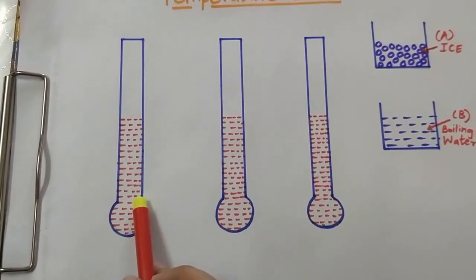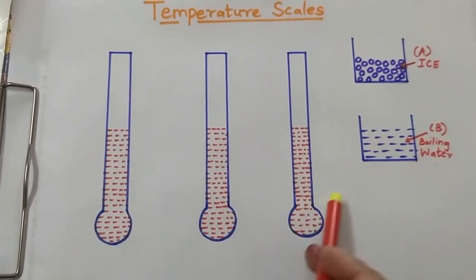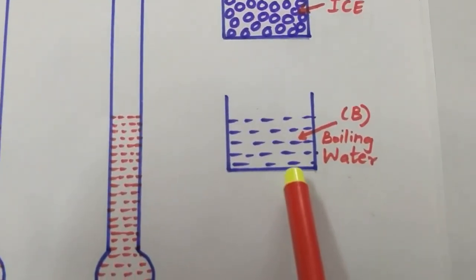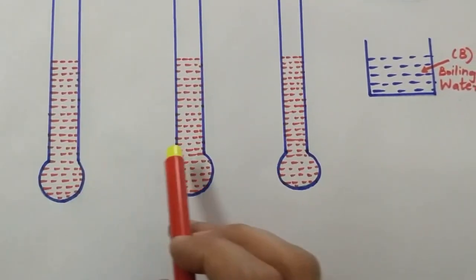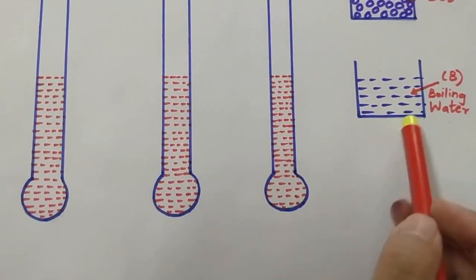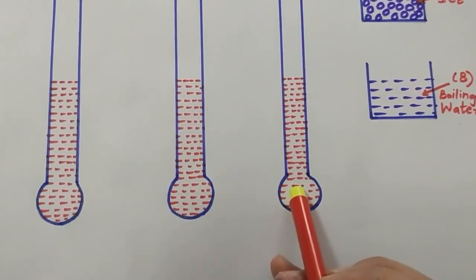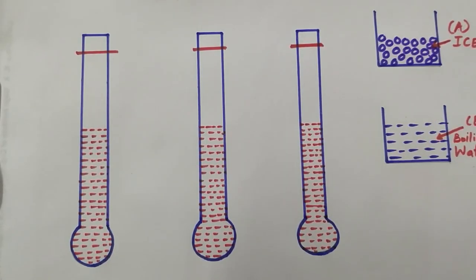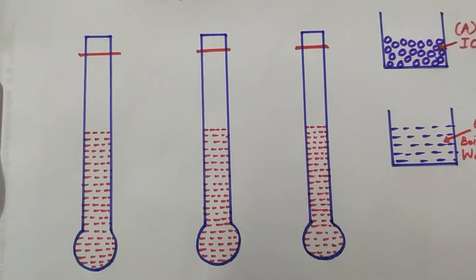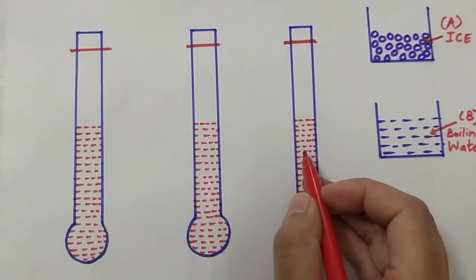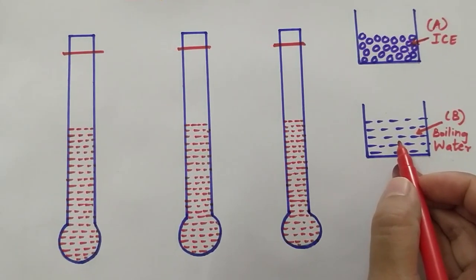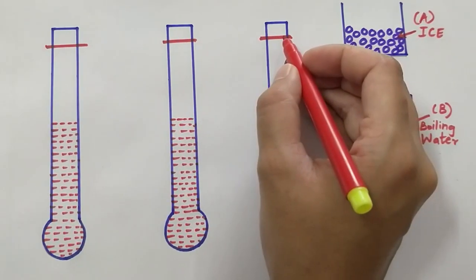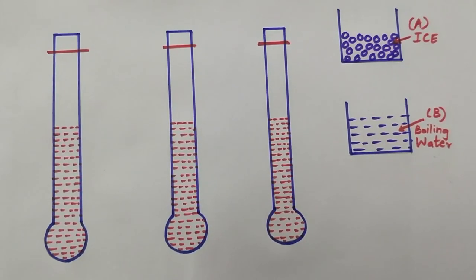We shall immerse all these three glass tubes initially in the boiling water. As we know, when a substance is heated it expands. So when these three glass tubes are immersed in boiling water, the mercury in these glass tubes will expand and reach a particular height. This point will be the same for all three glass tubes as these tubes are identical in nature.